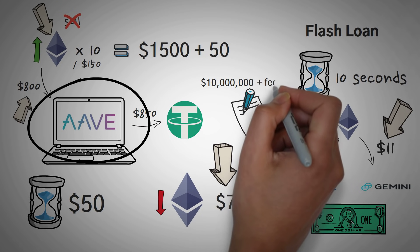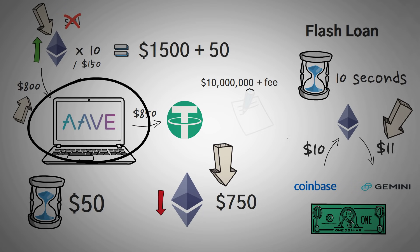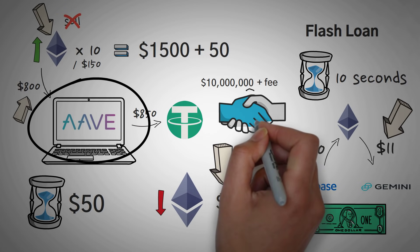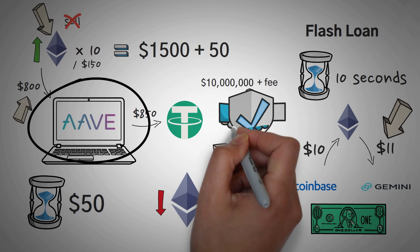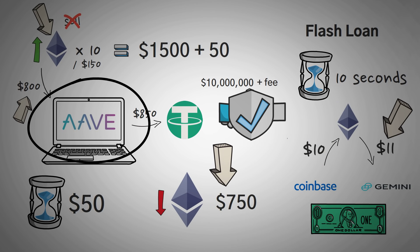And all one small little smart contract that gets run in 10 seconds. Essentially, you made a million dollars minus the fees that you had to pay for borrowing. But these fees are small because the lender knew that you would have to pay them back, and that it was for a very short period of time. Now this is a more advanced technique, but you could never perform this type of arbitrage in traditional finance.